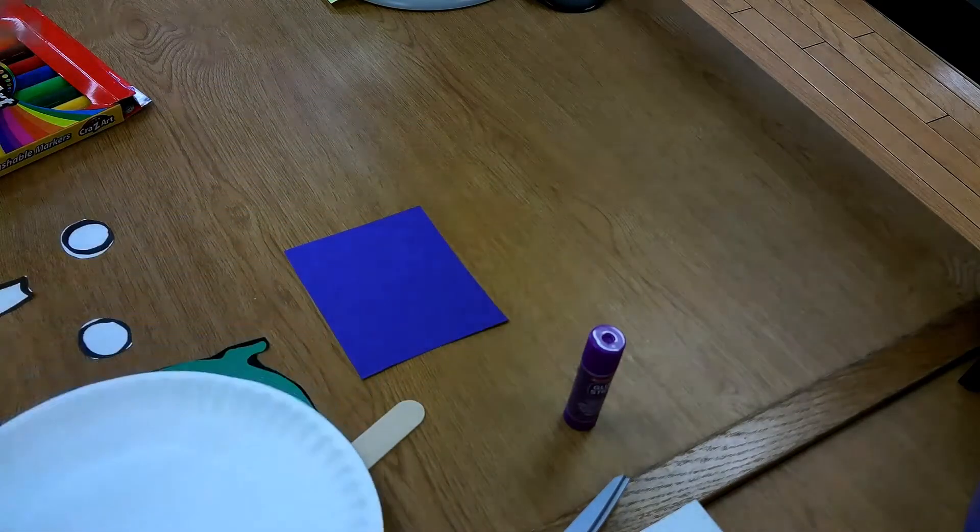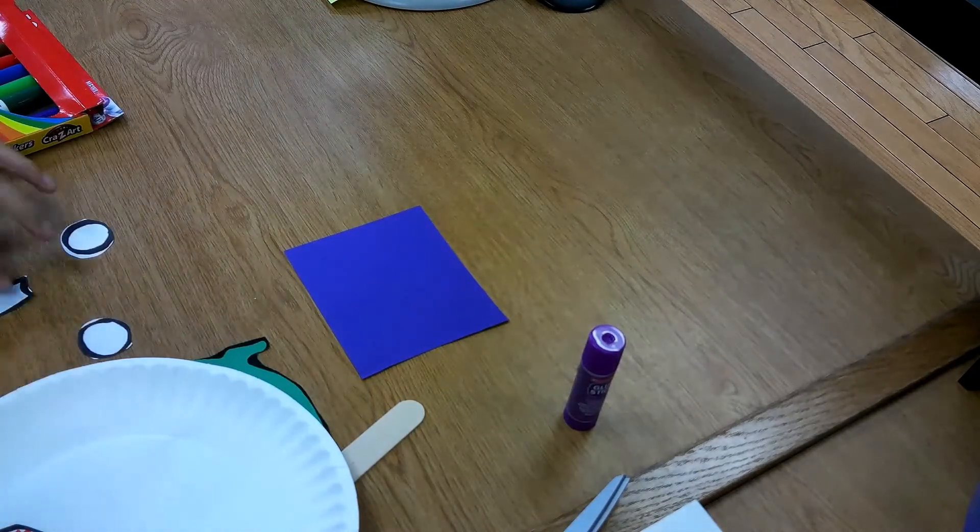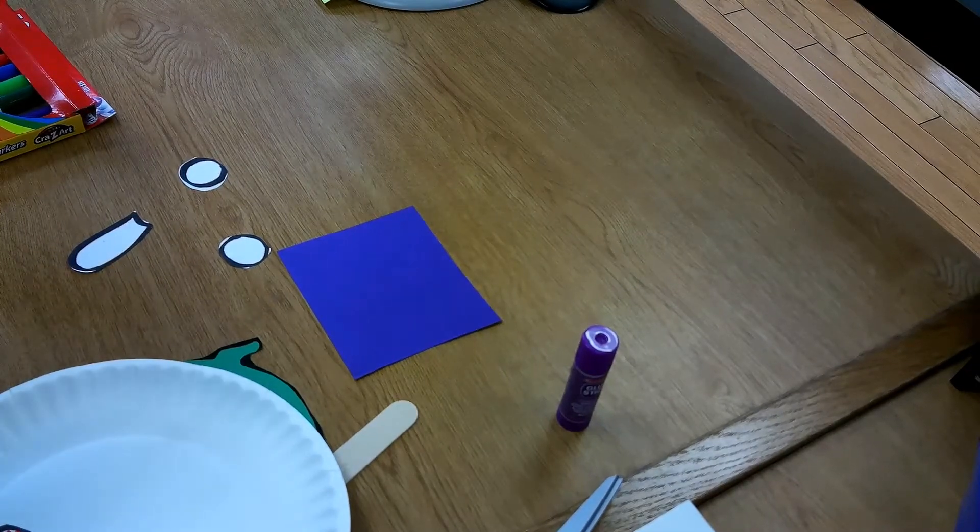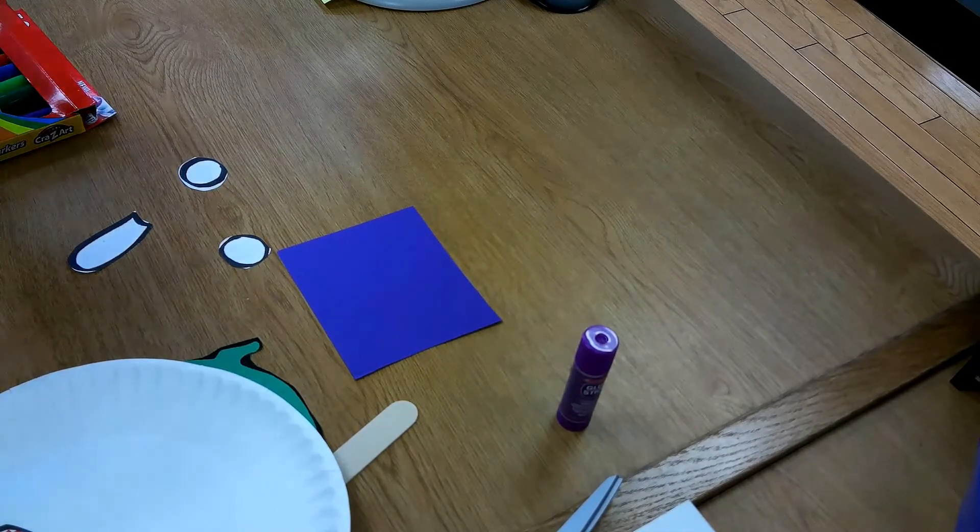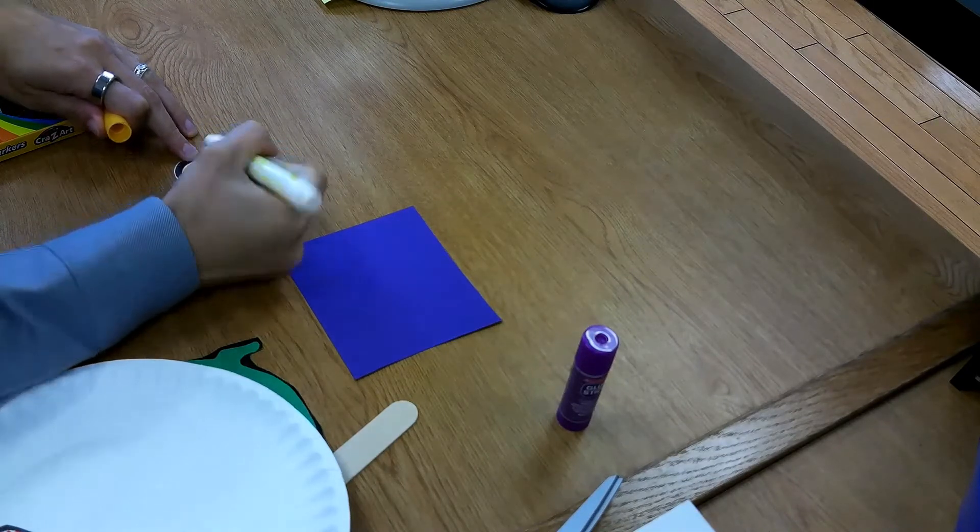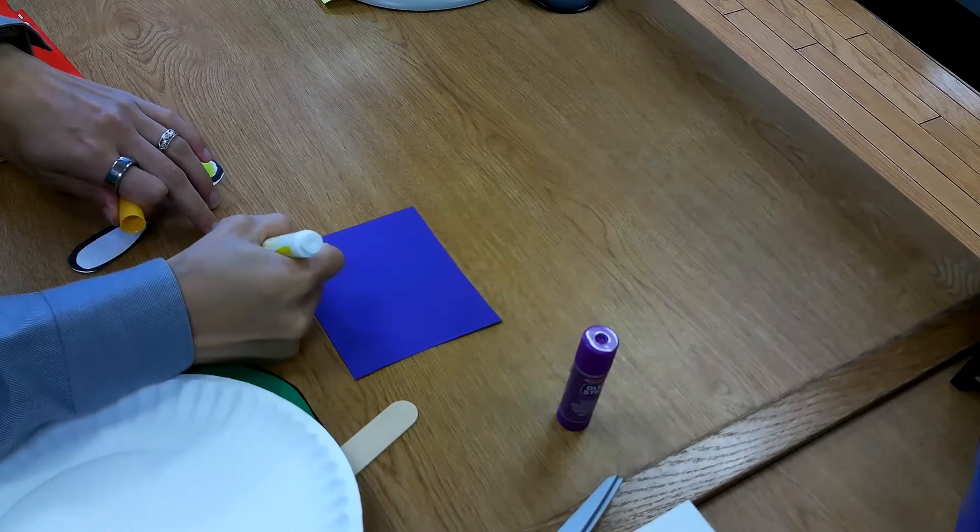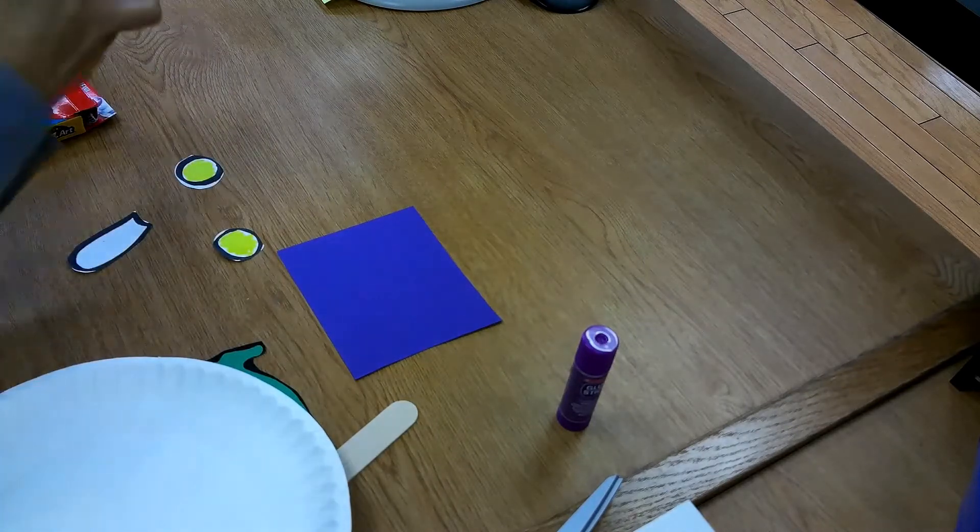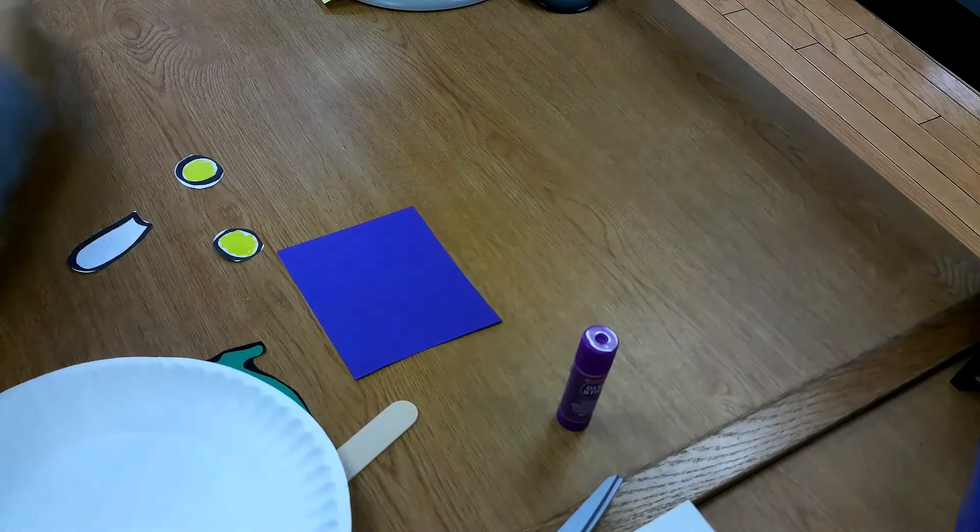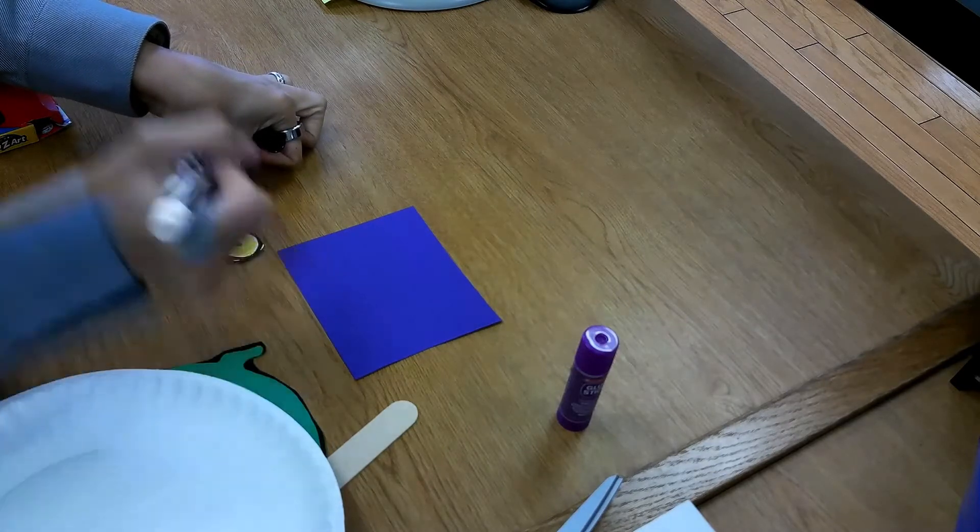And then the eyes I want to be yellow. But you can use whatever colors you want. It's totally up to you. So you can get as creative as you like. Big yellow eyes with the black dot in the middle. There we go.